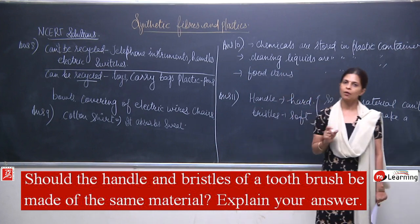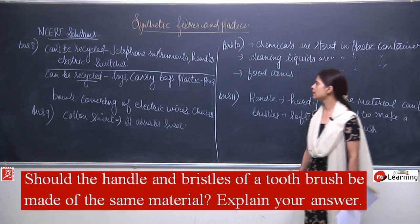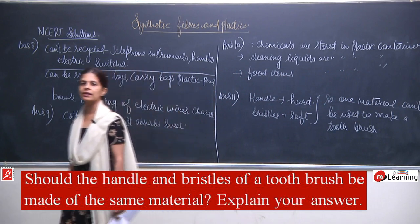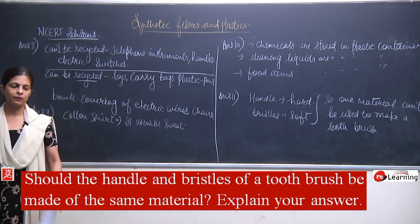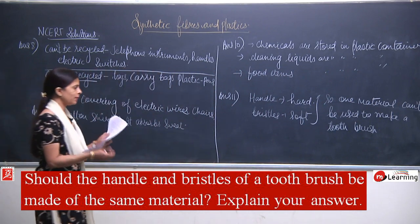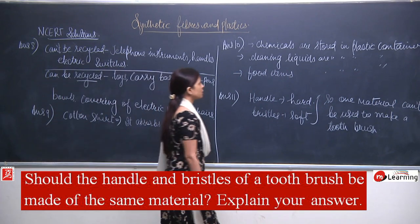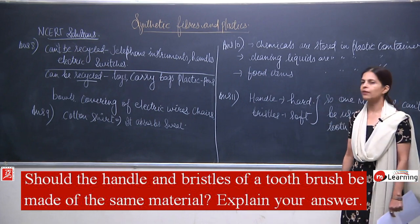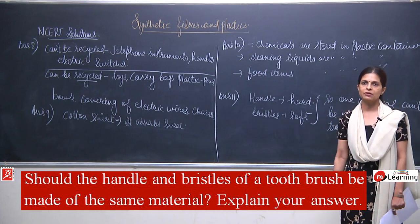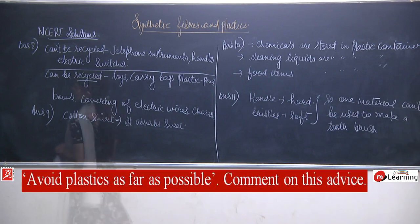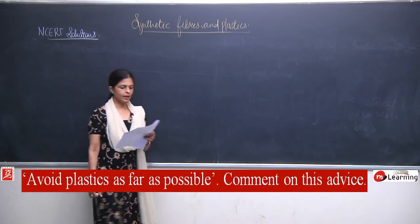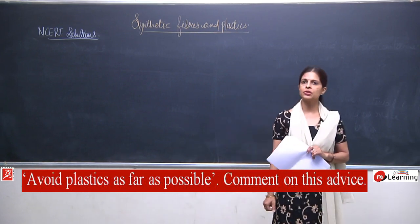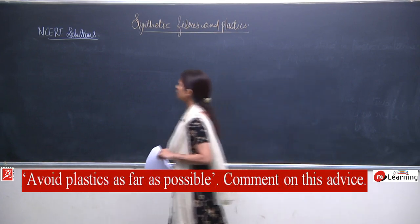The toothbrush cannot be made of only one material because the bristles must be very soft and the handle must be hard. That is answer number 11. Now we move to question number 12.